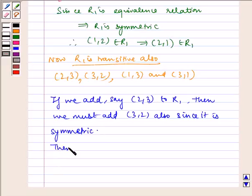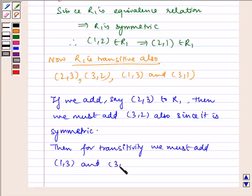Then for transitivity, we must add (1, 3) and (3, 1) also.